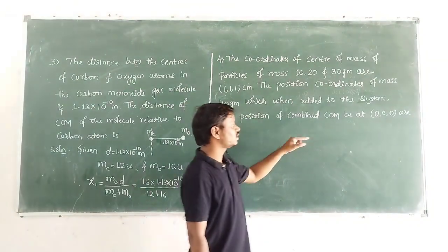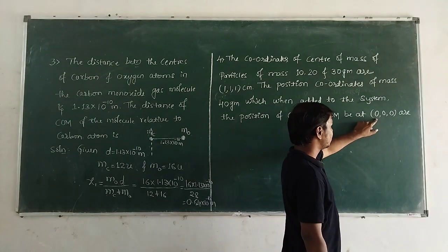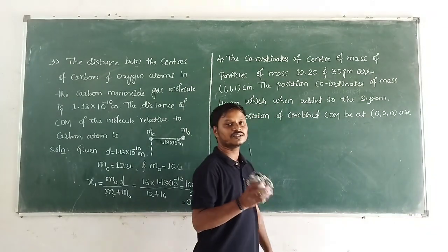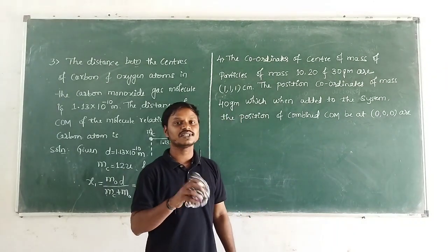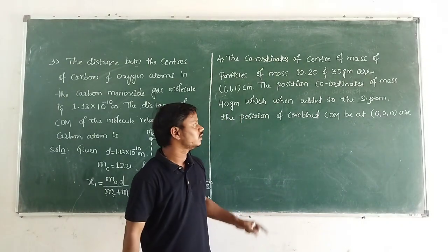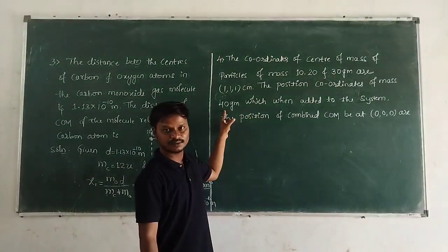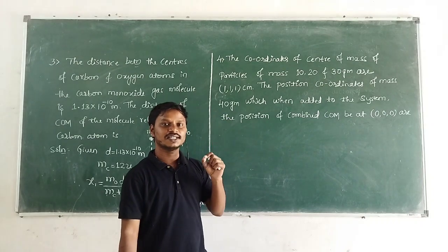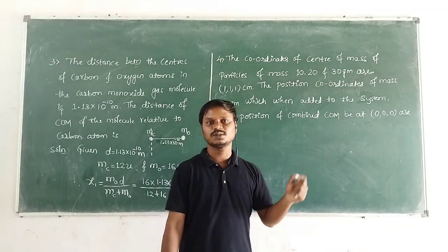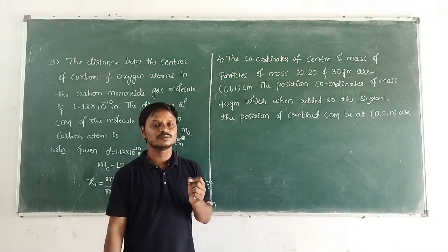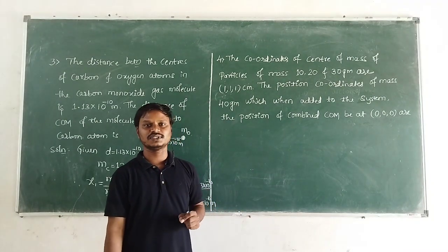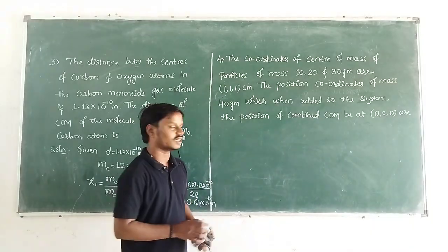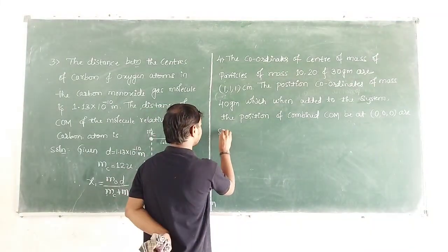When 40 gram is added to the system of 10, 20, and 30 gram, the position of the center of mass changes to (0, 0, 0). Our aim is to find the position coordinates of the 40 gram particle — X4, Y4, and Z4 — because 40 gram is the fourth particle.